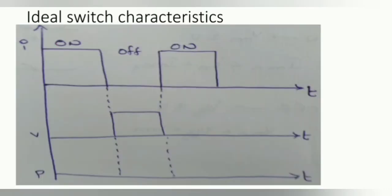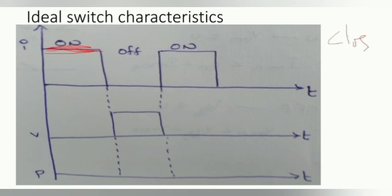Looking at the diagram, whenever the switch is closed (ON), current starts to flow and continues at a certain level. At the same time, the voltage drop is zero — you can observe this in the diagram. So whenever the switch is ON, there is current but zero voltage drop, and there is no transition time.